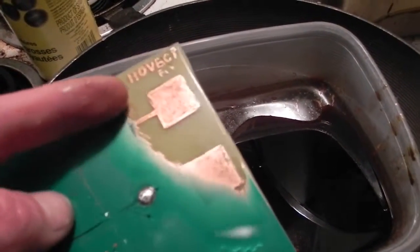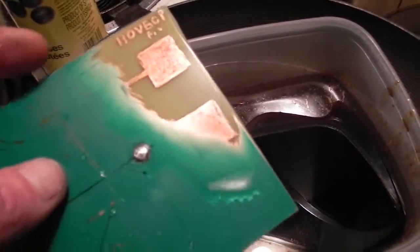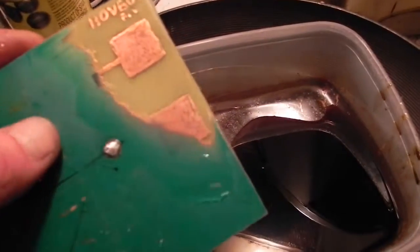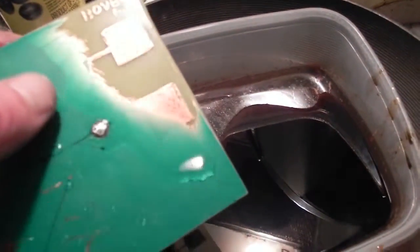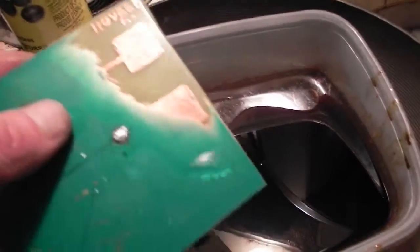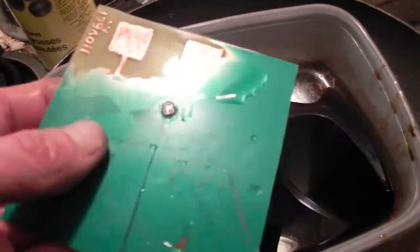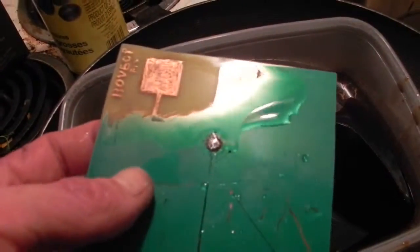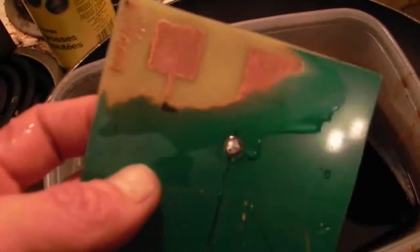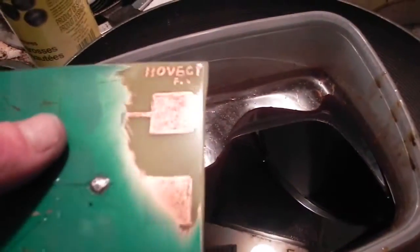The best thing to do would be put on frisket tape or masking tape and cut out the areas that you want etched, making sure that the tape is well adhered to the copper clad board. Then it will etch out with the exposed areas. Using frisket tape or frisket sheet, like for airbrushing, would work really well.